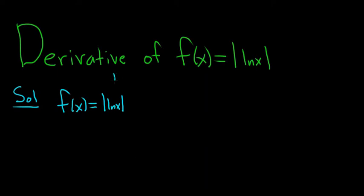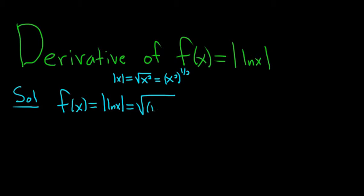The first thing you want to do is realize that the absolute value of x is equal to the square root of x squared, and in turn you can write that as x squared to the one half power, because the square root can be written to the one half power. So this becomes the square root of (ln x) squared, and again we can write that square root to the one half power. So this is ((ln x)²)^(1/2).